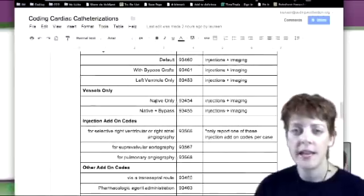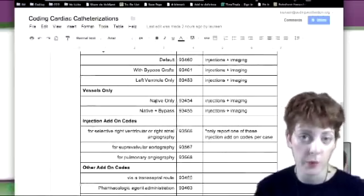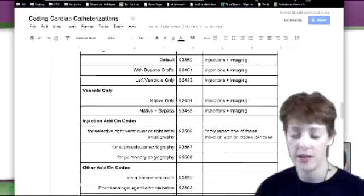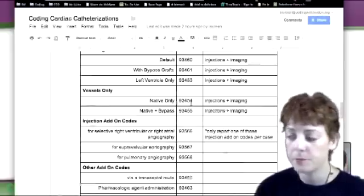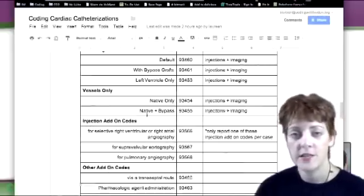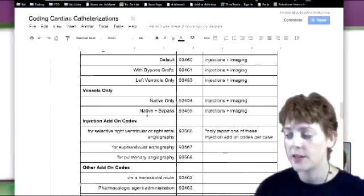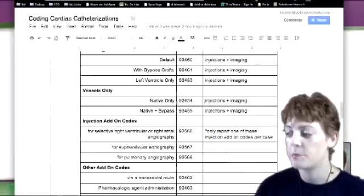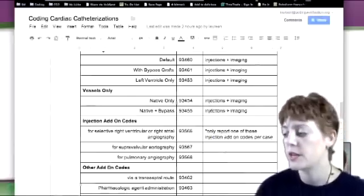Vessels only, if it's the native vessel, meaning the vessel you were born with, it's not a bypass graft vessel, it's 93454. If it's a native vessel and a bypass, then it's 93455. And again, both of them include injections and imaging.